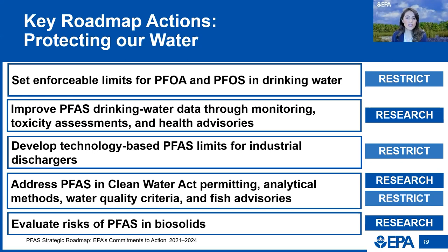An earlier round of EPA monitoring from 2013 to 2015 helped us discover PFAS contamination and led to significant state and local actions to safeguard our drinking water. With our latest rule, we're taking it a step further — testing for nearly five times more PFAS at significantly more water systems and using methods that can detect PFAS at much lower levels. These new data will be critical in improving our understanding of how communities, including low-income communities and communities of color, may be exposed to PFAS in their drinking water.